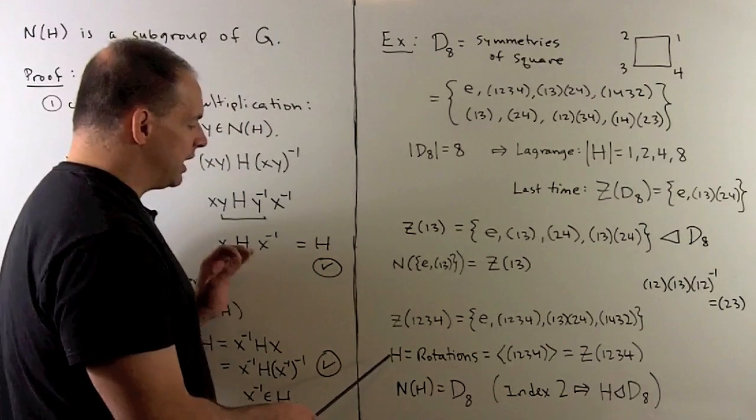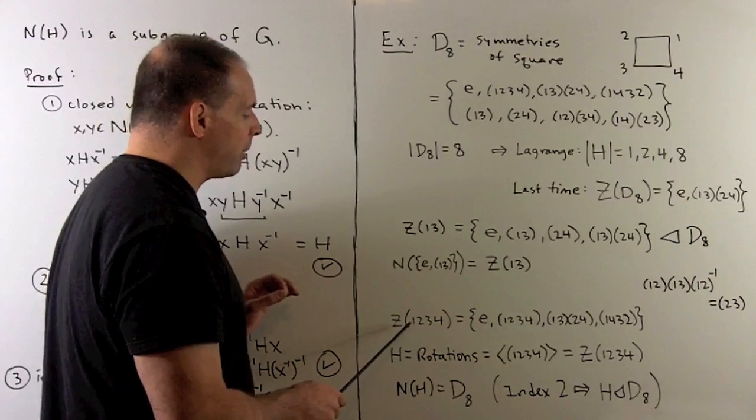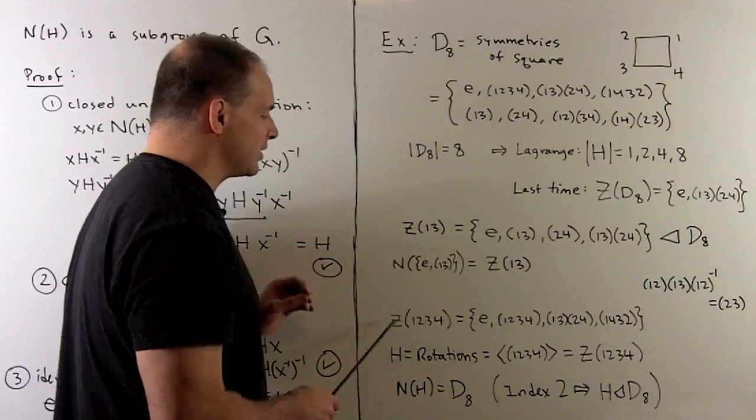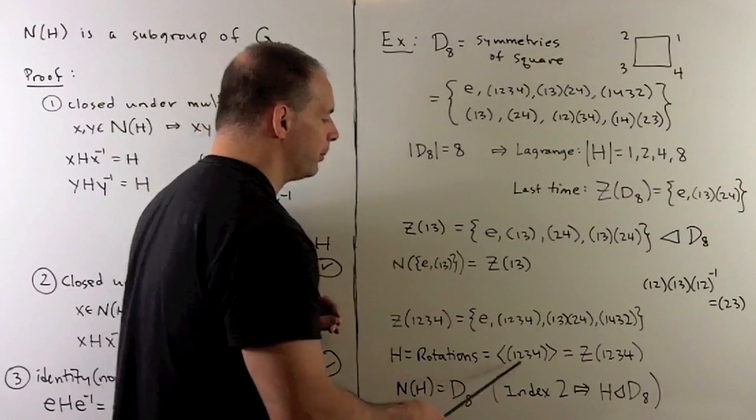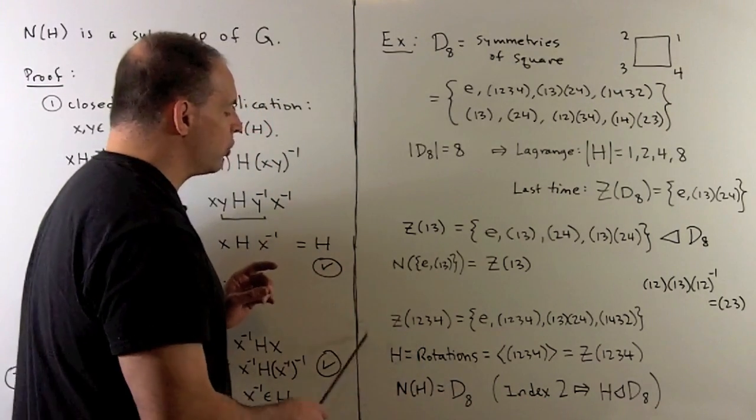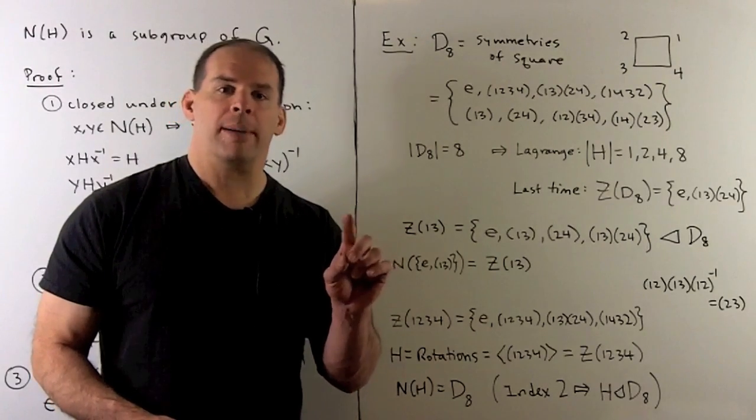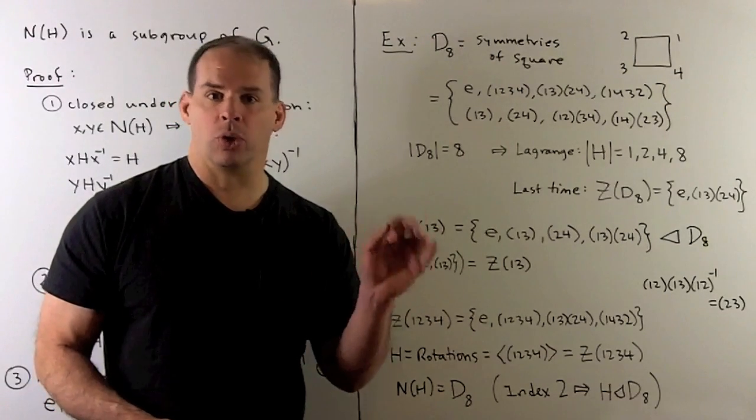Now if we take the subgroup of rotations, generated by (1,2,3,4), that's the same as our centralizer. Then we're going to have all of D8 as the normalizer. Because our subgroup here has index two, it's normal. So that means the normalizer is all the group.